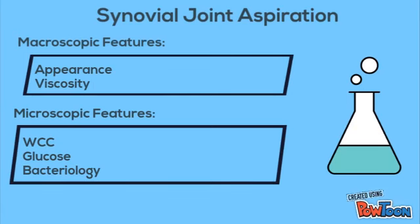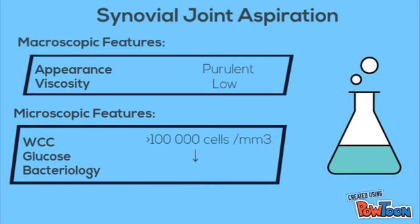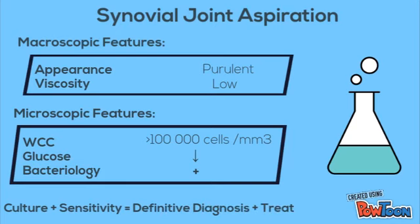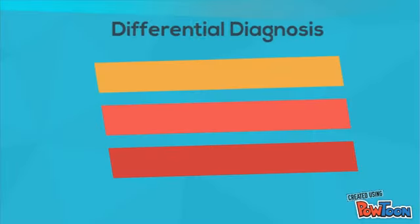Synovial joint aspiration will show a purulent appearance with low viscosity, an increased white cell count of over 100,000, decreased glucose, and positive bacteriology. Culture and sensitivity will give a definitive diagnosis and guide treatment.